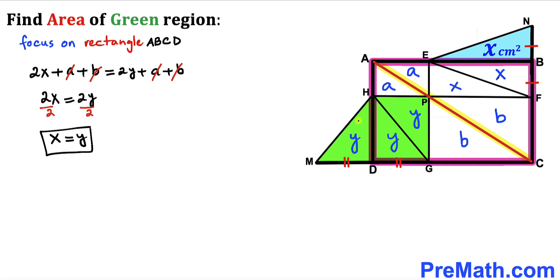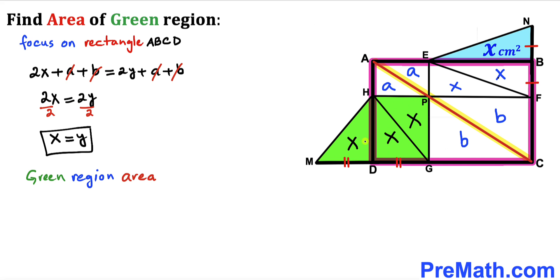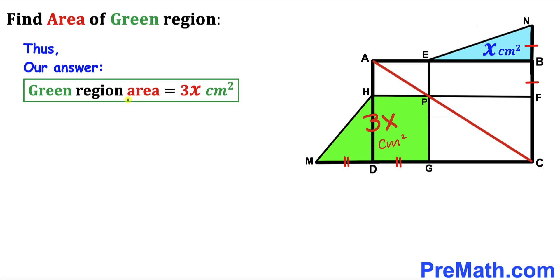Now since Y equals X, I'm going to replace Y with X throughout. So the green region area turns out to be X plus X plus X, which equals 3X. Thus the area of the green region is 3X centimeter square, and that's our final answer. Thanks for watching and please don't forget to subscribe to my channel for more exciting videos.